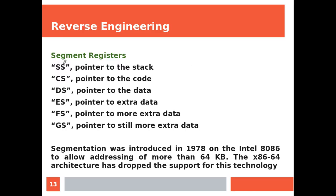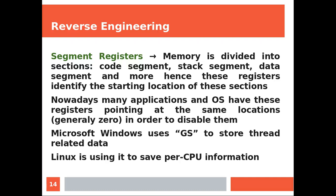Now, segment registers. SS is a pointer to the stack. CS is the pointer to the code. DS is the pointer to the data and then extra data, more extra data, still more extra data. And segmentation was introduced in 1978 on the Intel 8086 to allow addressing of more than 64 kilobits of memory. The modern platforms have dropped the support for this technology. Memory is divided into sections. Code segment, stack segment, data segment and more. So hence, these registers identify starting location of these sections. Nowadays, many applications and operating systems have these registers pointing at the same location, generally zero, in order to disable them.